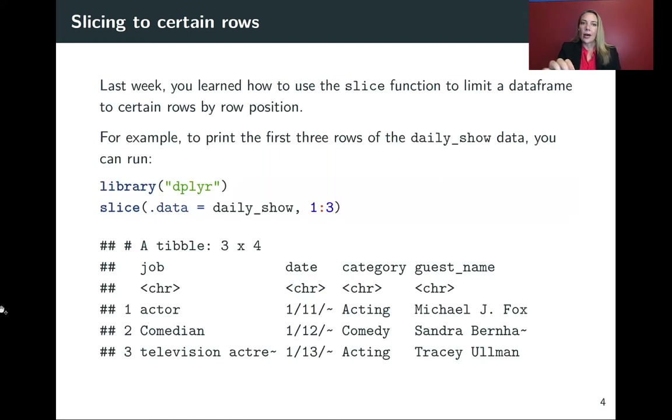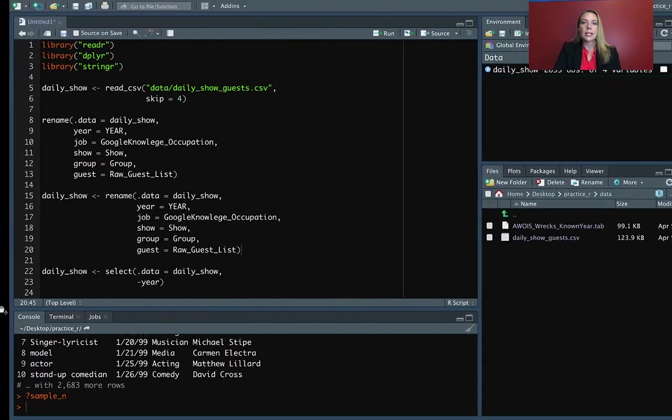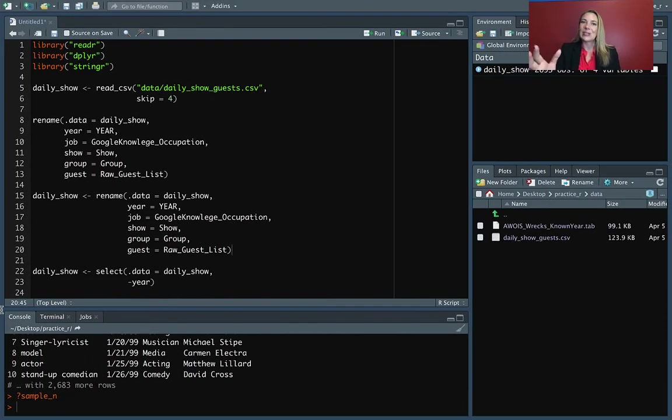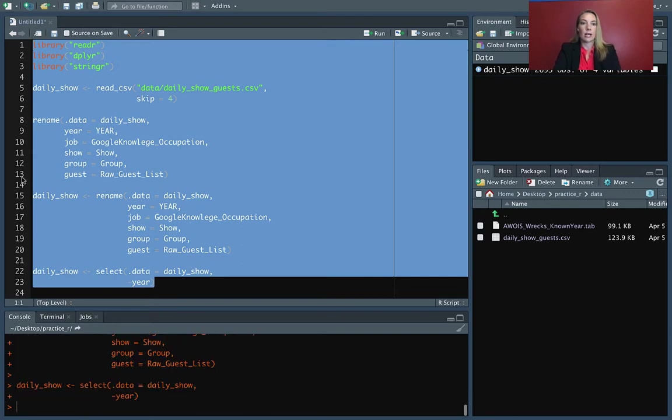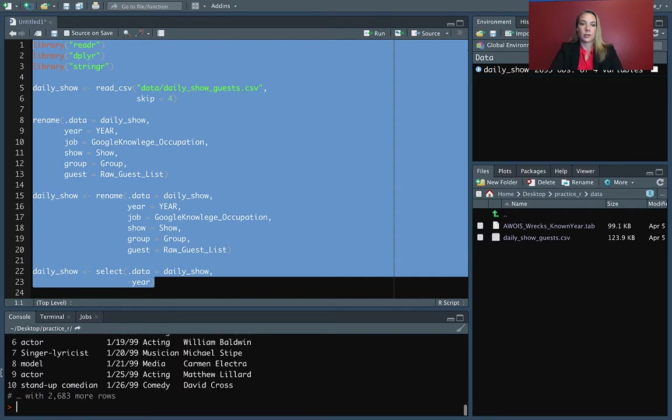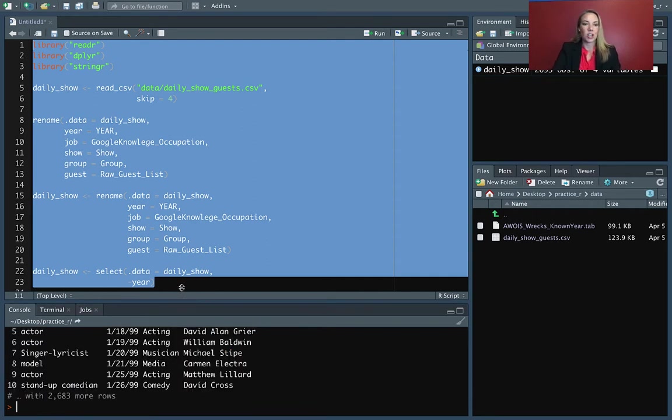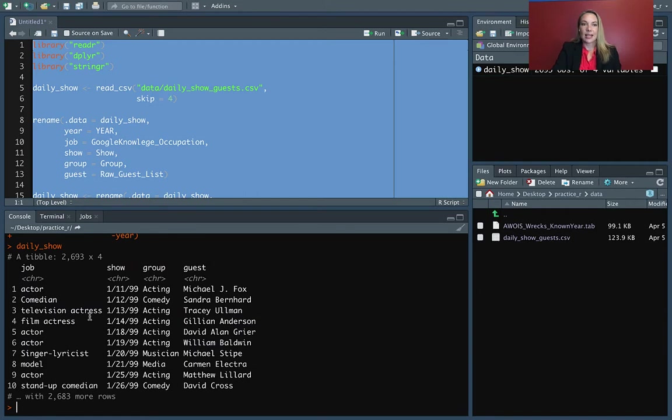So one of these we've already covered in the lectures for the last chapter. That's the slice function. As a reminder, this lets you extract certain rows from your data frame based on the positions there. So you really are pulling out just a certain part of your data frame in terms of the rows based on the first through the fifth row, for example.